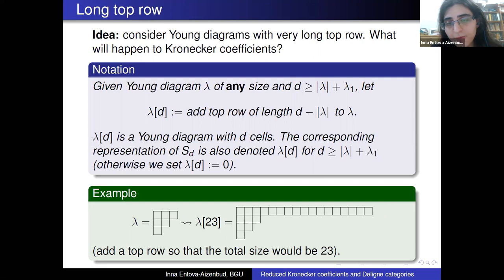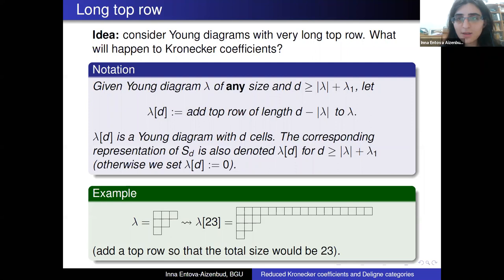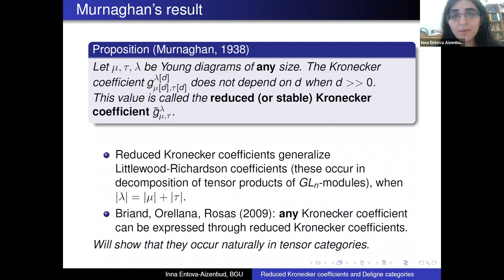As an example, if you take lambda to be a partition of size 6, we can build a Young diagram with a very long top row of size 23 by adding 17 boxes on top. We consider this as a representation of the symmetric group on D elements, denoted lambda[D]. This is defined when D is greater than or equal to the size of lambda plus the length of the first row; otherwise, we define lambda[D] to be the zero representation.